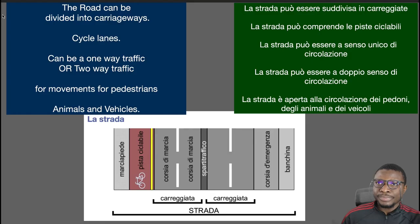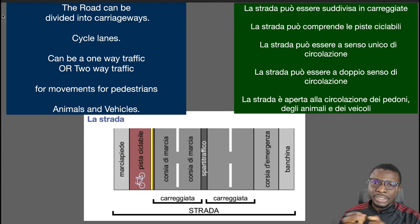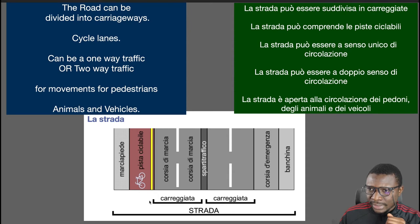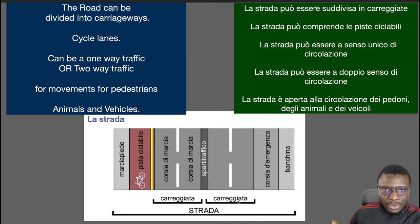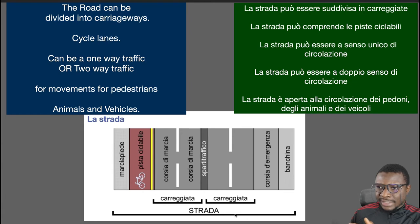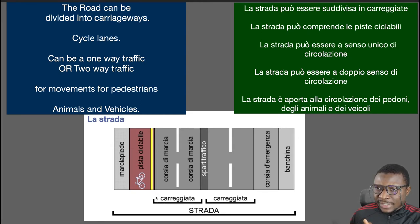These roads can be divided into carriageways. Carriageways are simply the part that vehicles transit on. As you can see here, we have 'la strada' which is the road and it covers all these parts, meanwhile the carriageway goes from here to here.